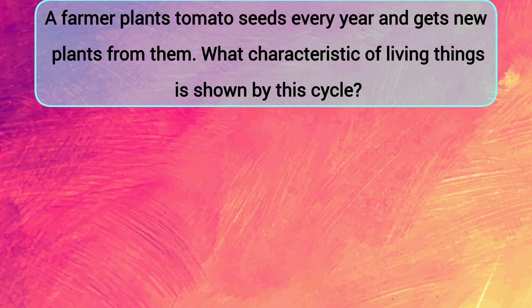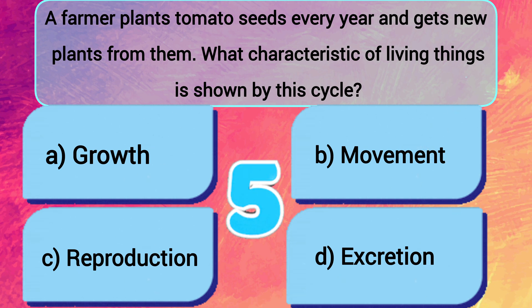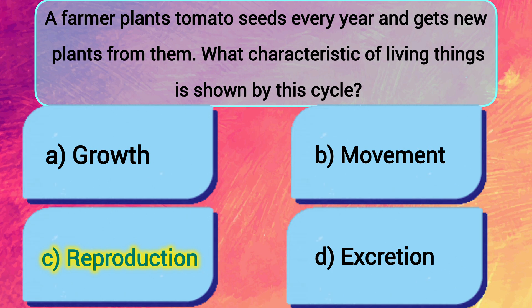A farmer plants tomato seeds every year and gets new plants from them. What characteristic of living things is shown by this cycle? A: Growth. B: Movement. C: Reproduction. D: Excretion. The answer is C — reproduction.